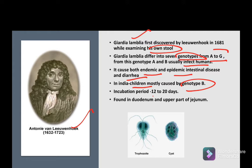The incubation period for Giardia lamblia is 12 to 20 days. It is found in the duodenum and the upper part of the jejunum.